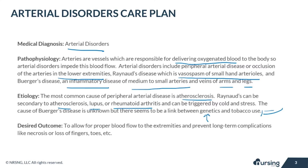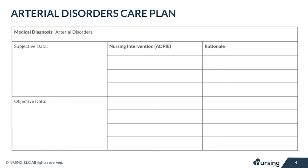The desired outcome when dealing with arterial disorders is to allow for proper blood flow to the extremities and to also prevent long-term complications like necrosis or loss of fingers, toes, etc. Let's take a look at some of the subjective data and also objective data that your patient with an arterial disorder may present with.